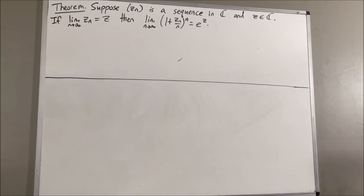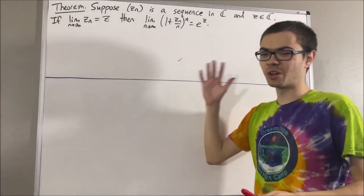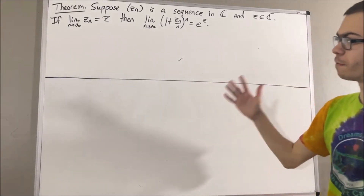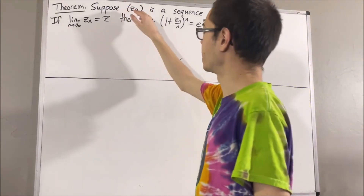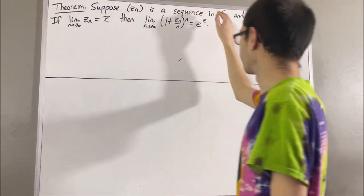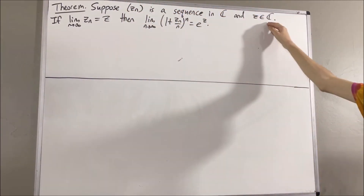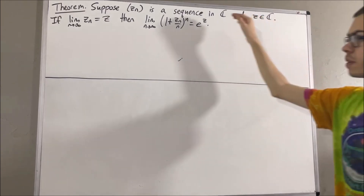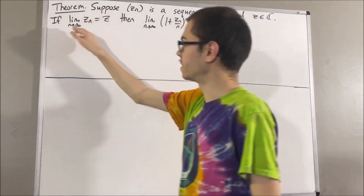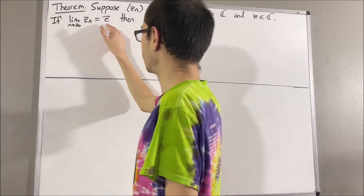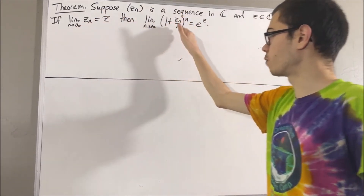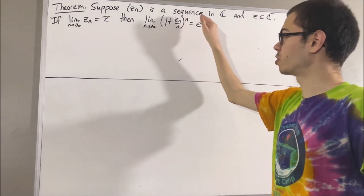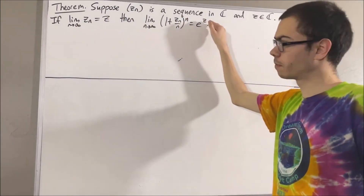Hello! In this video, we are going to prove the following theorem. Suppose zn is a sequence of complex numbers, and suppose z is a complex number. If zn converges to z, then 1 plus zn over n to the power of n converges to e to the z.